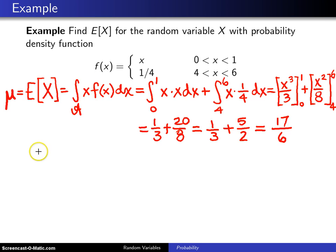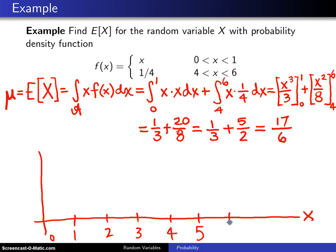Once again, looking at the geometry for this particular distribution, now this is a very unusual distribution. The range here goes from 0 to 6, so let's put some tick marks in there. This rather unusual probability density function is x between 0 and 1, and it is 1/4 between 4 and 6, so it looks something like that.